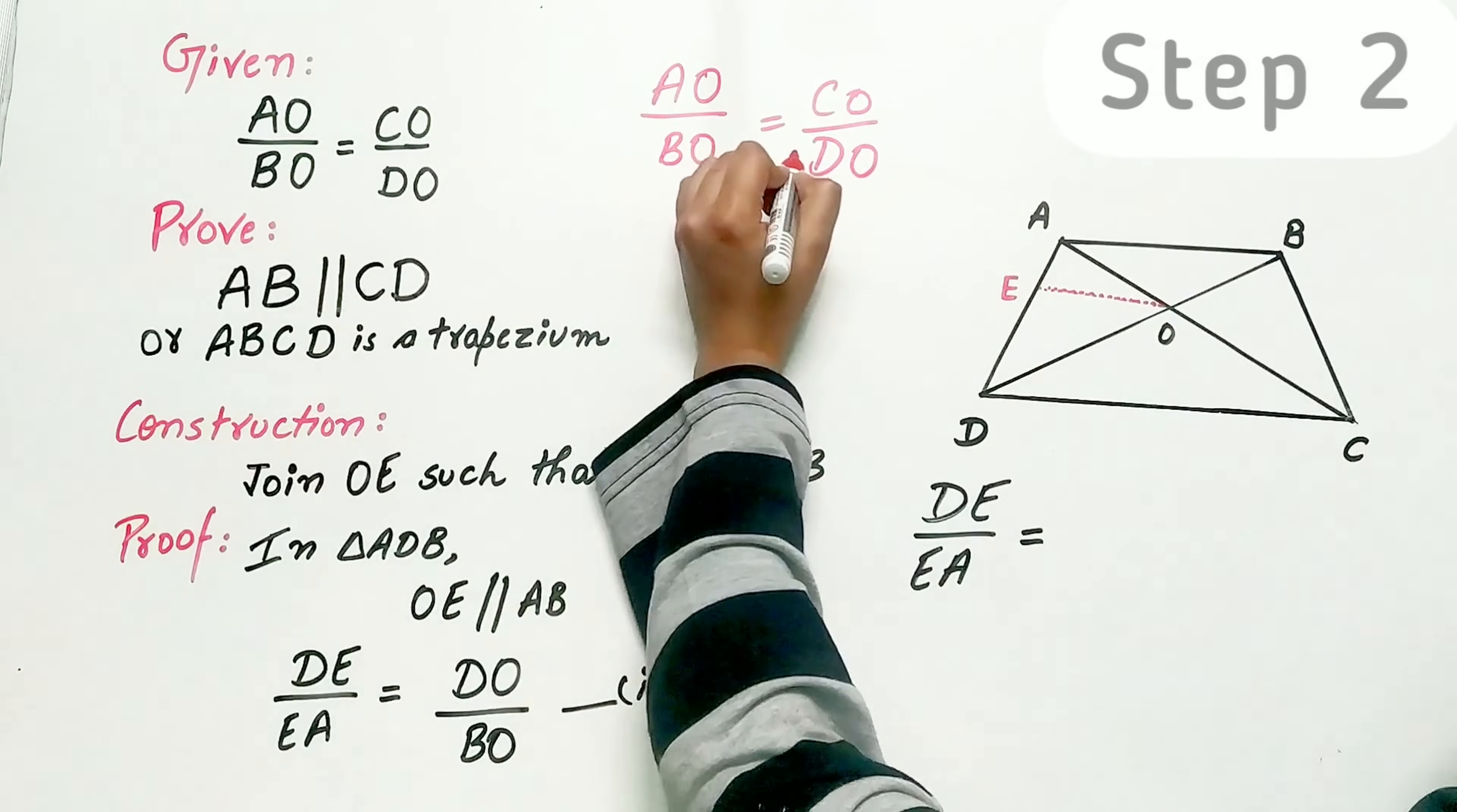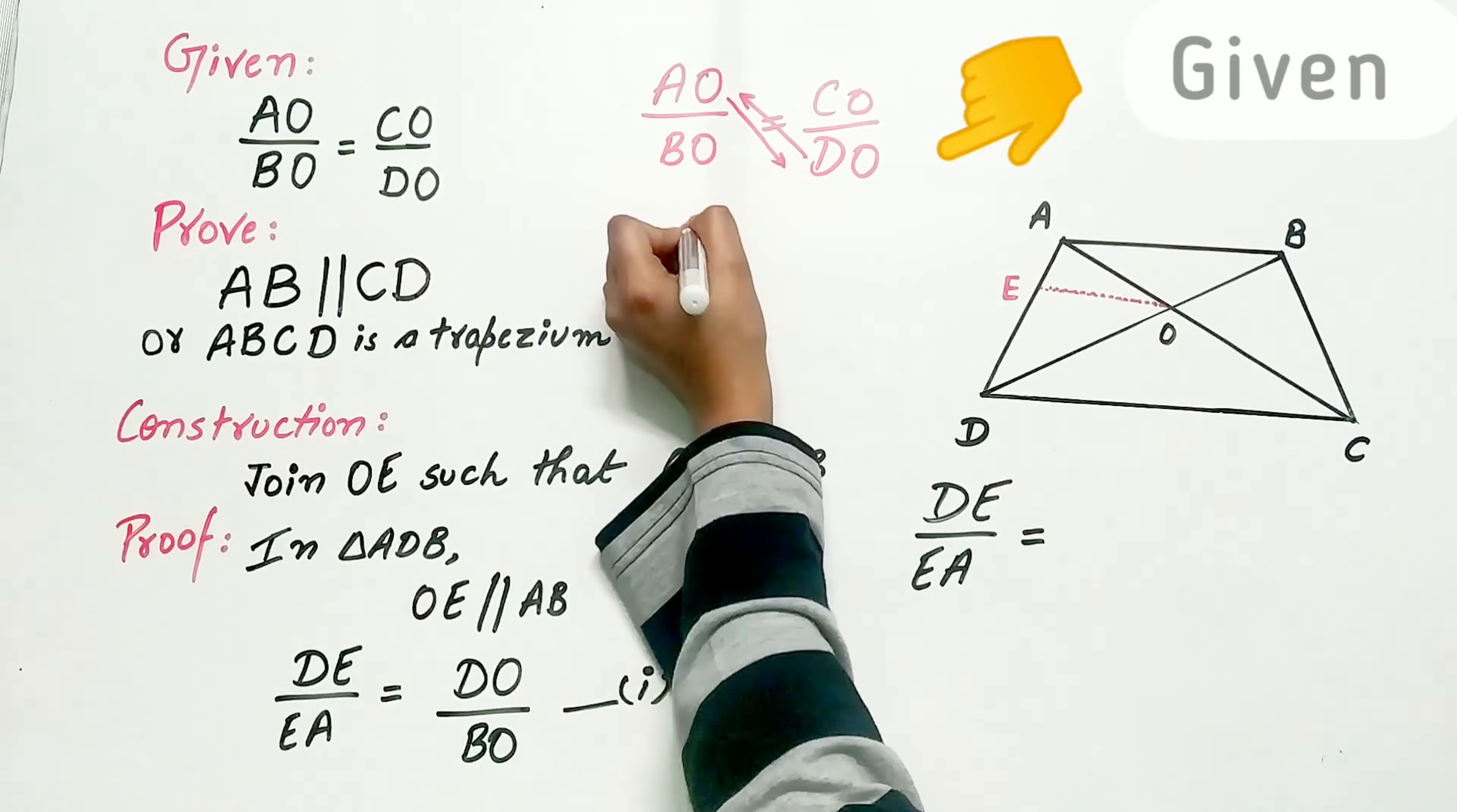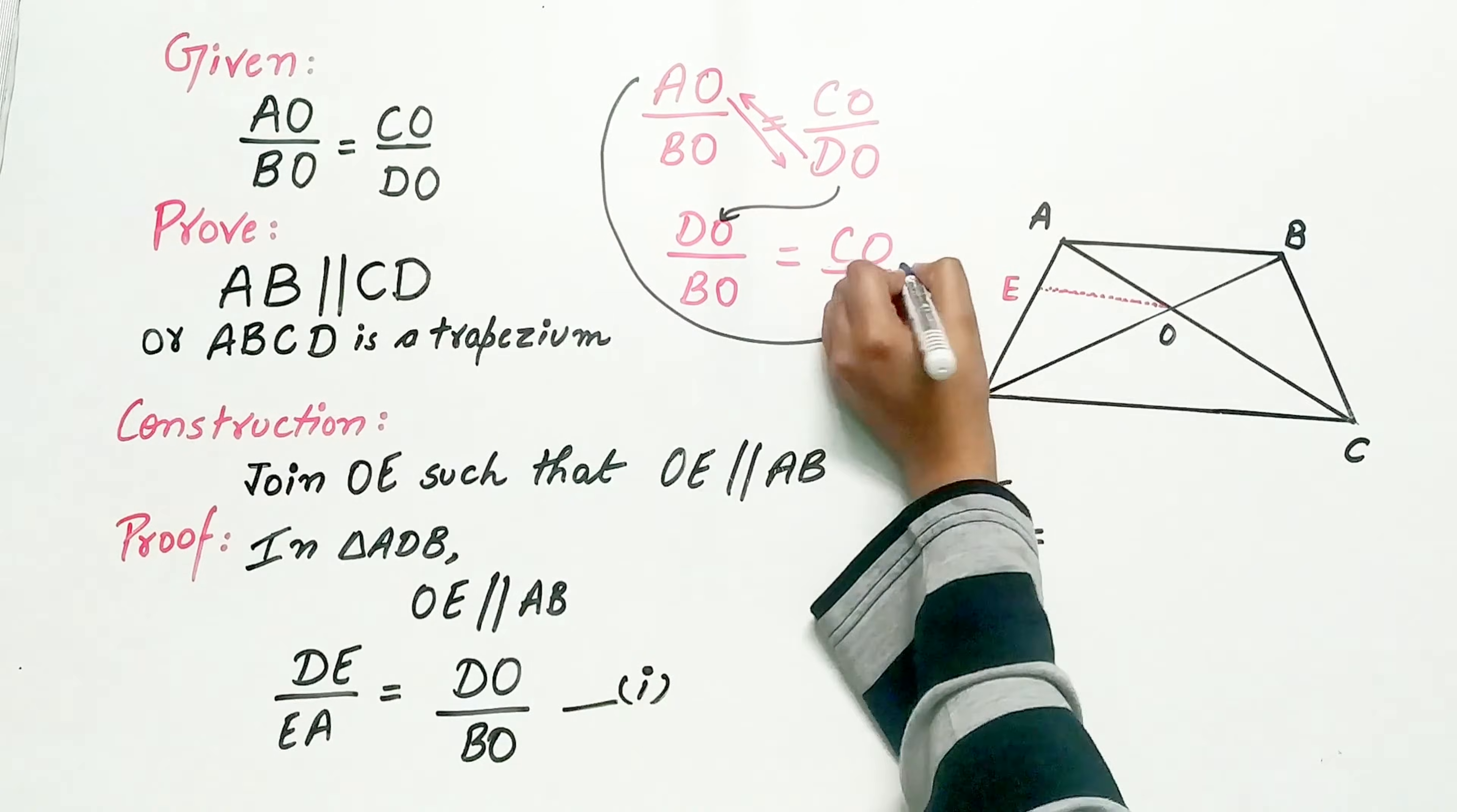Now look carefully. Transpose DO to the left-hand side and AO to the right-hand side. So DO by BO is equal to CO by AO. Mark it as equation 2.